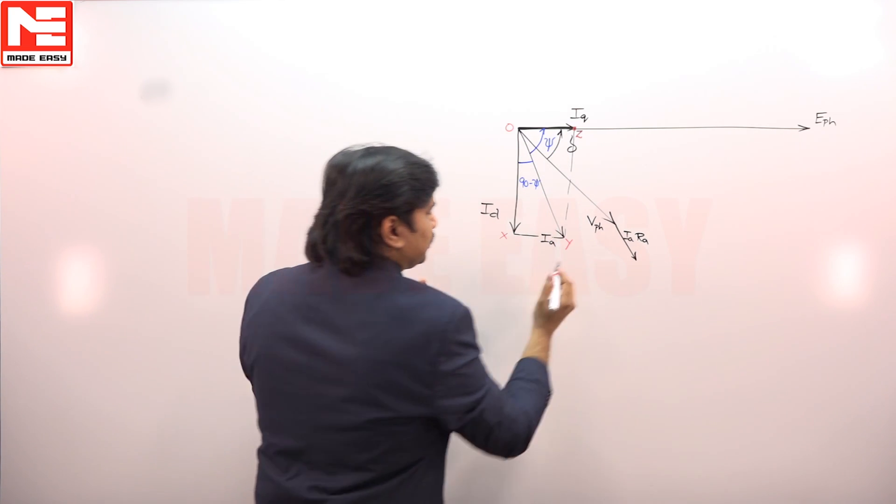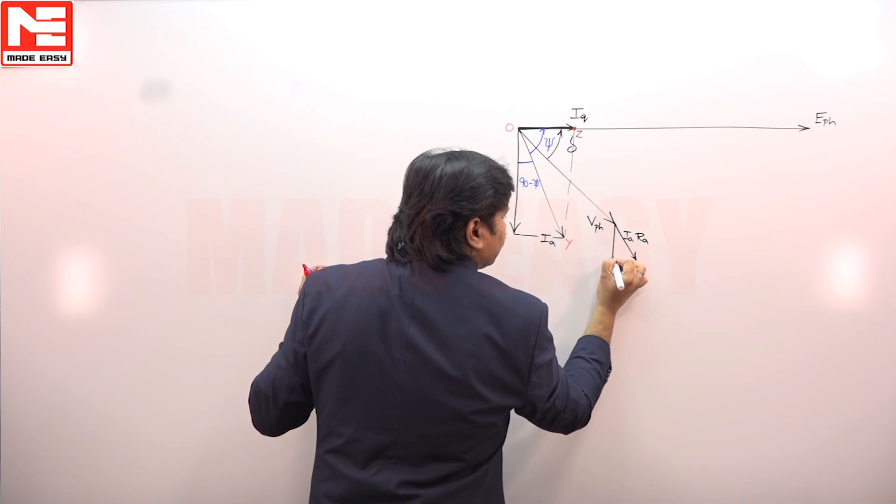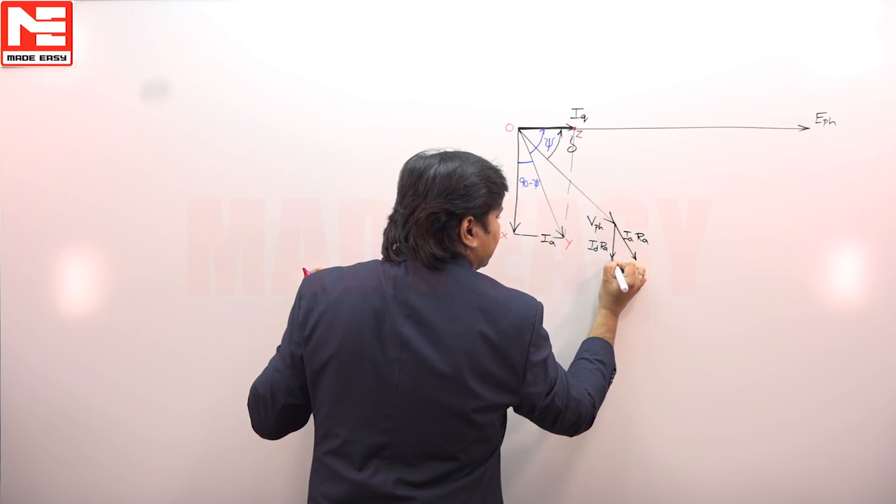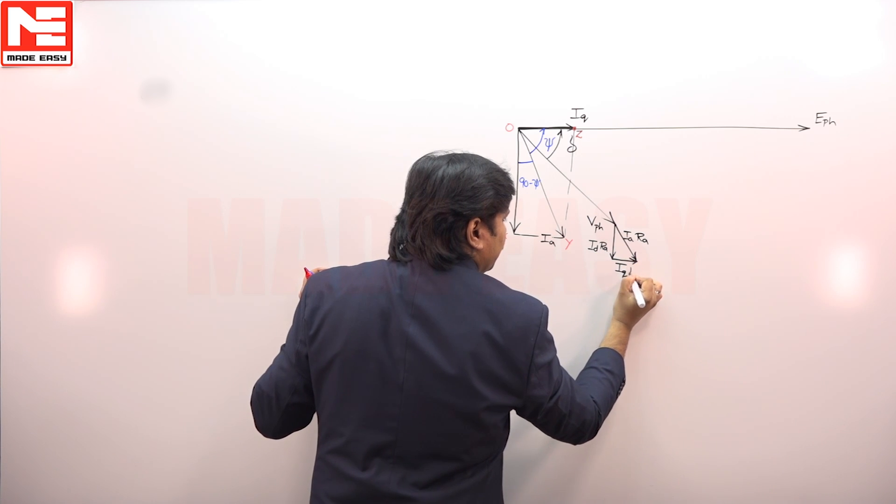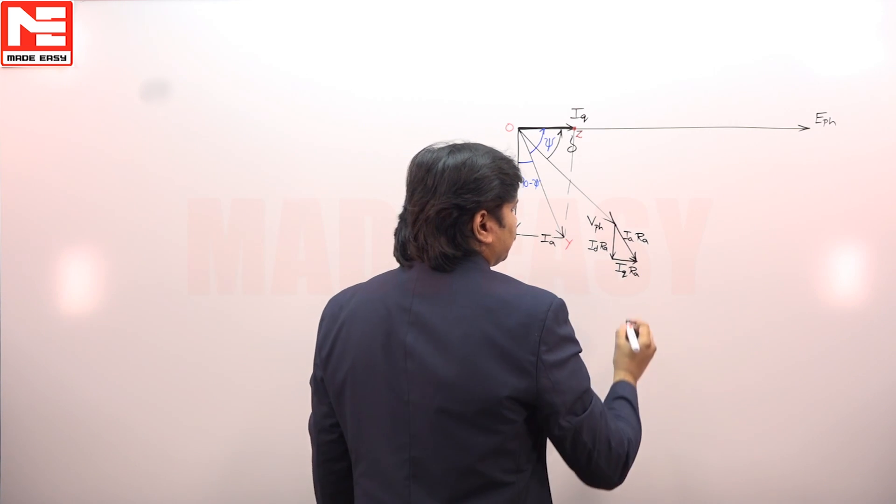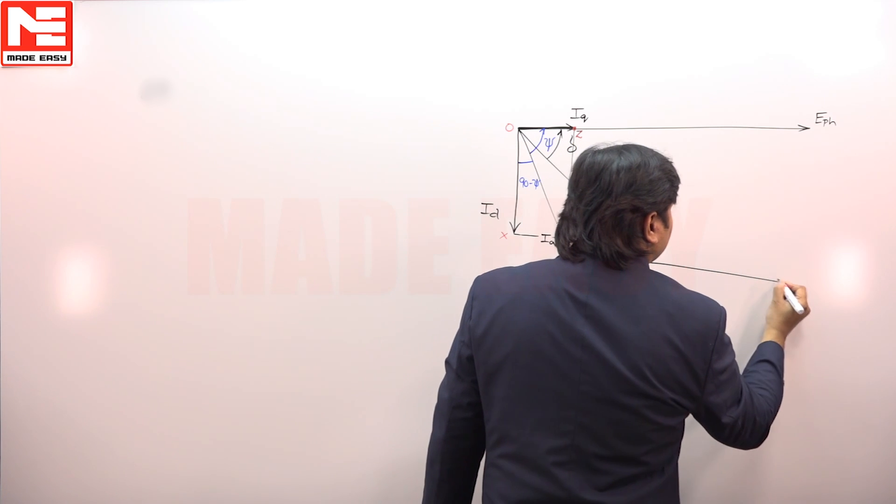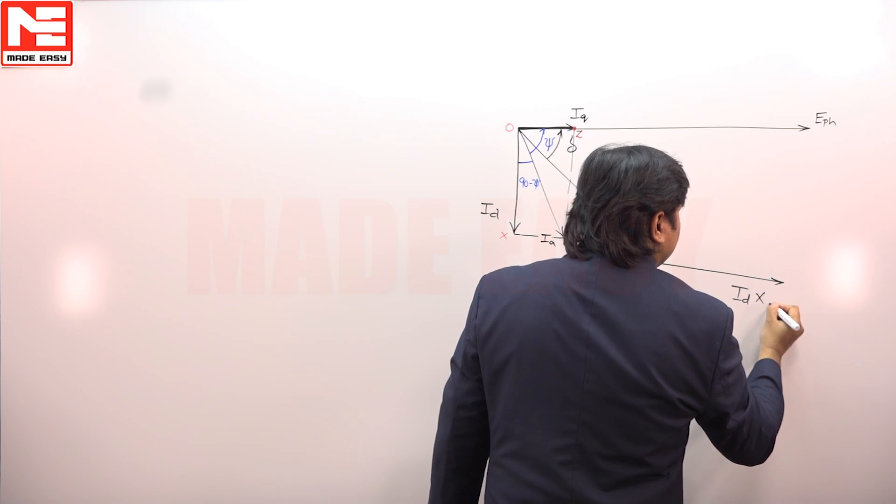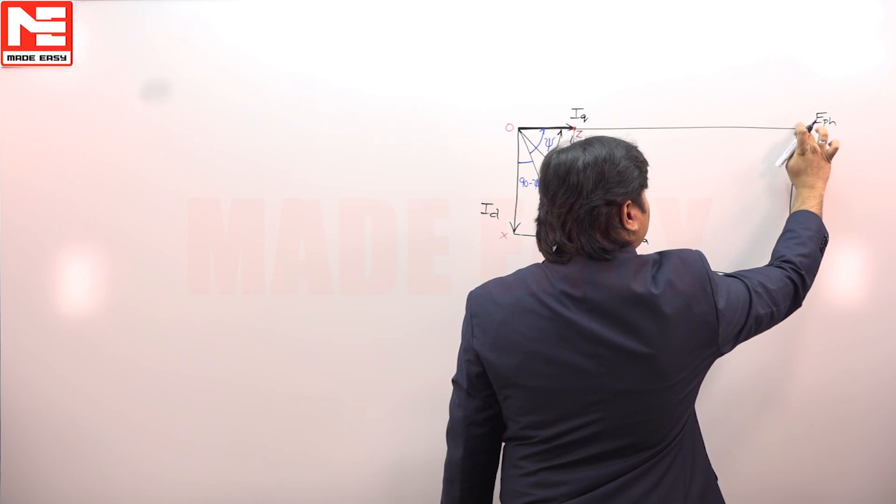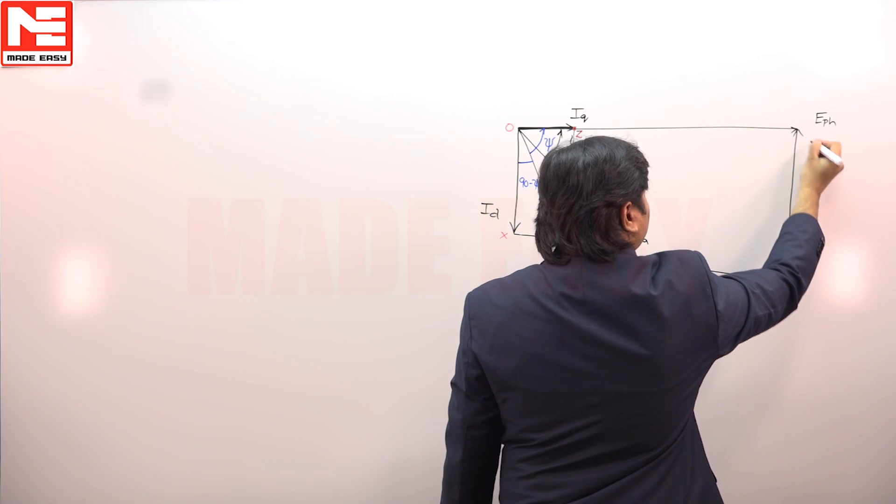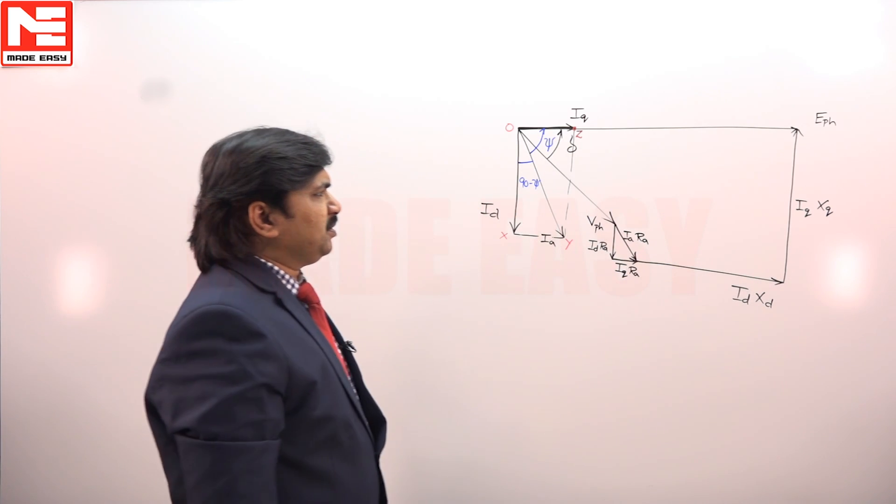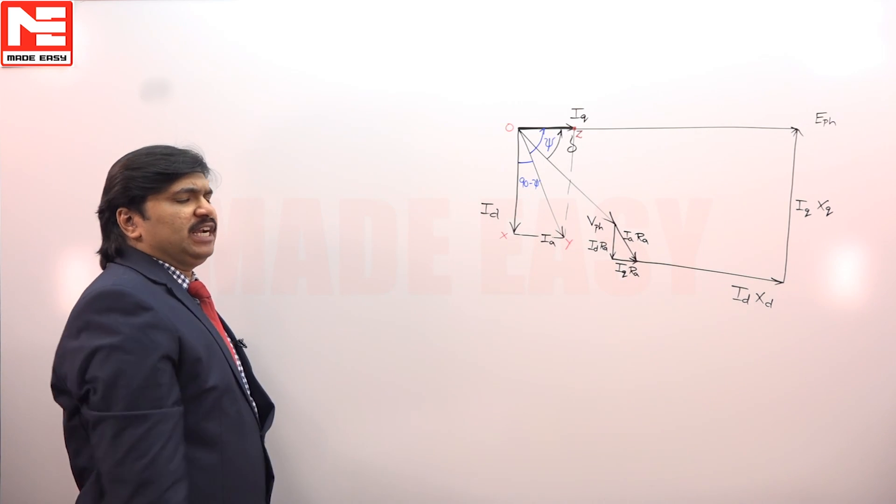Next, this is ID RA. This is IQ RA. From this, ID XD, IQ XQ. This was the basic phasor diagram we can develop for salient pole synchronous machine.